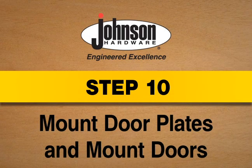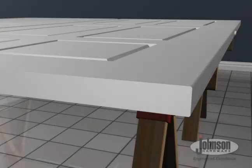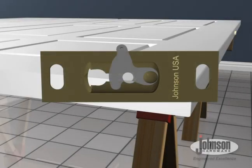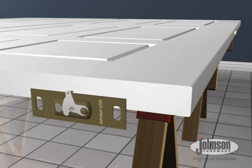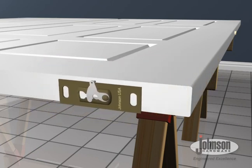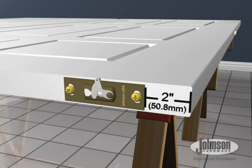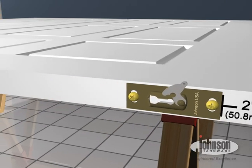Step 10. Mount door plates and mount doors. To mount the door plates, first attach a single door plate on top of each of the doors, 2 inches from the edge, with lock tab on the same side.